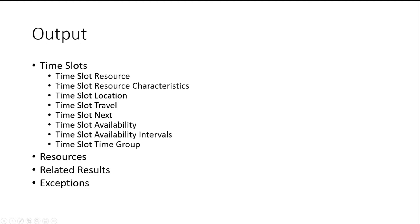The output of the API — again a simplified signature with more detail in the documentation — returns time slots along with available resources. If there are related results, for example, if a single resource requirement is passed in and a crew is returned as available, all other resources in that crew are also returned as related results. Any exceptions thrown by the API are also returned in the API call.